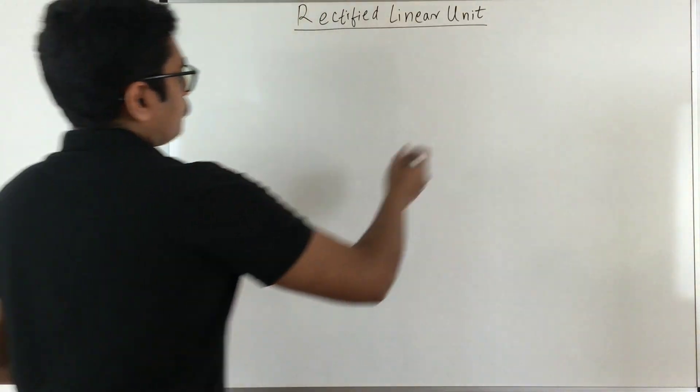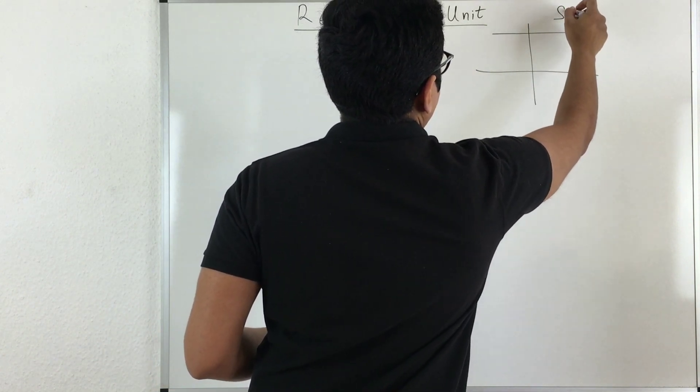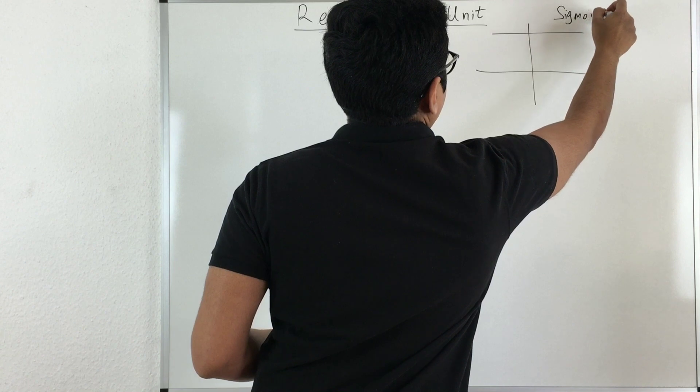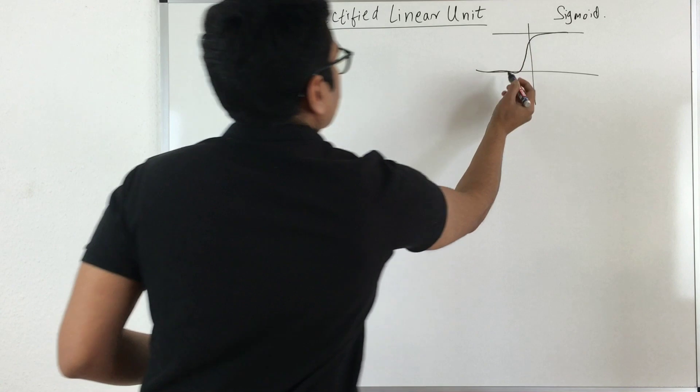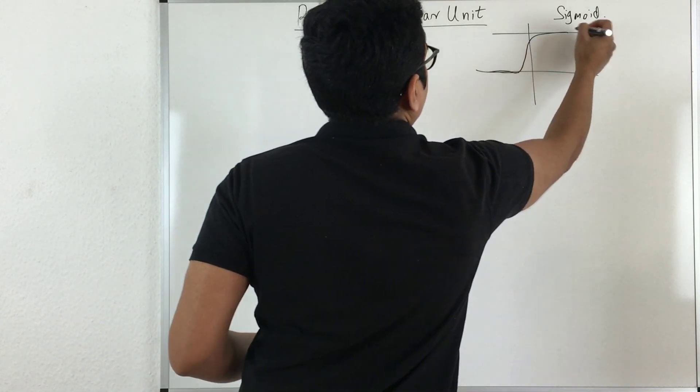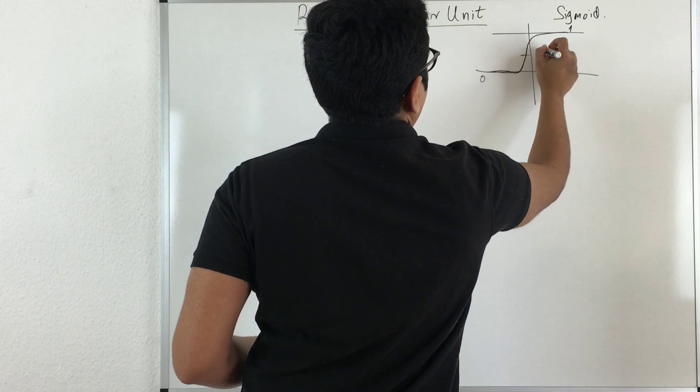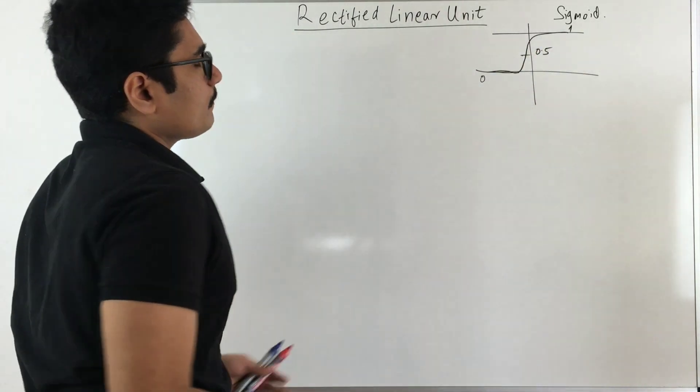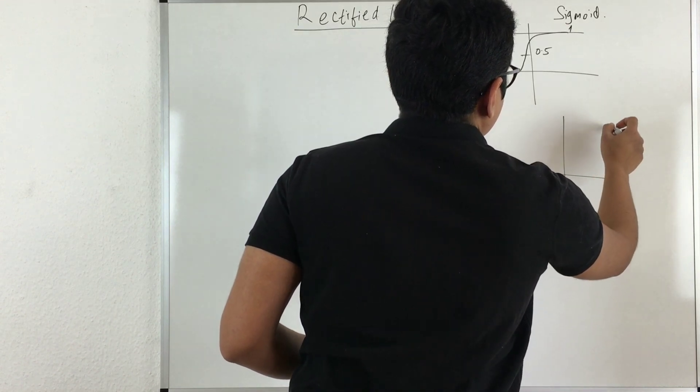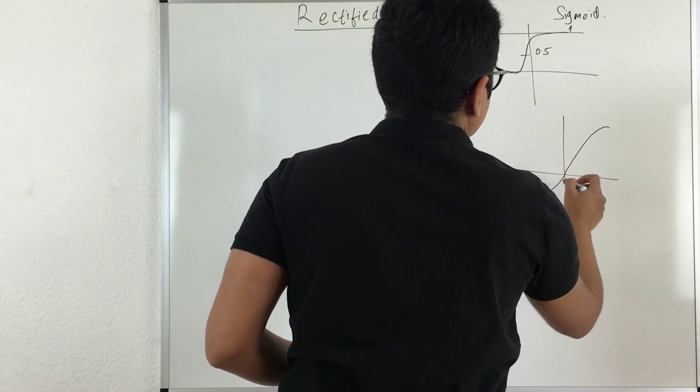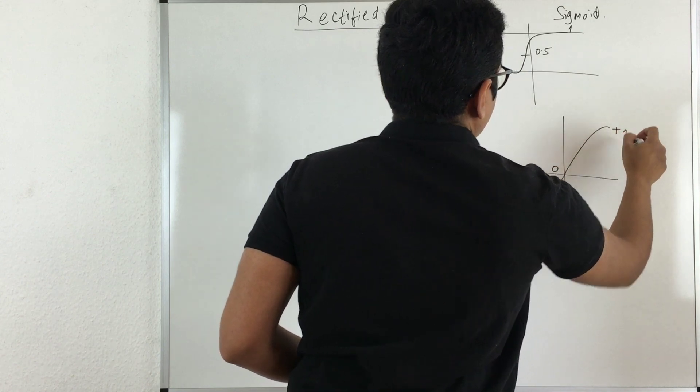We also know the graphs of these functions. Say we have this sigmoid function, the graph of it looks something like this. So it was ranging from 1 to 0 and you have a breaking point somewhere at 0.5. For tanh the graph was something like this, so 0 and you have minus 1 to positive 1.